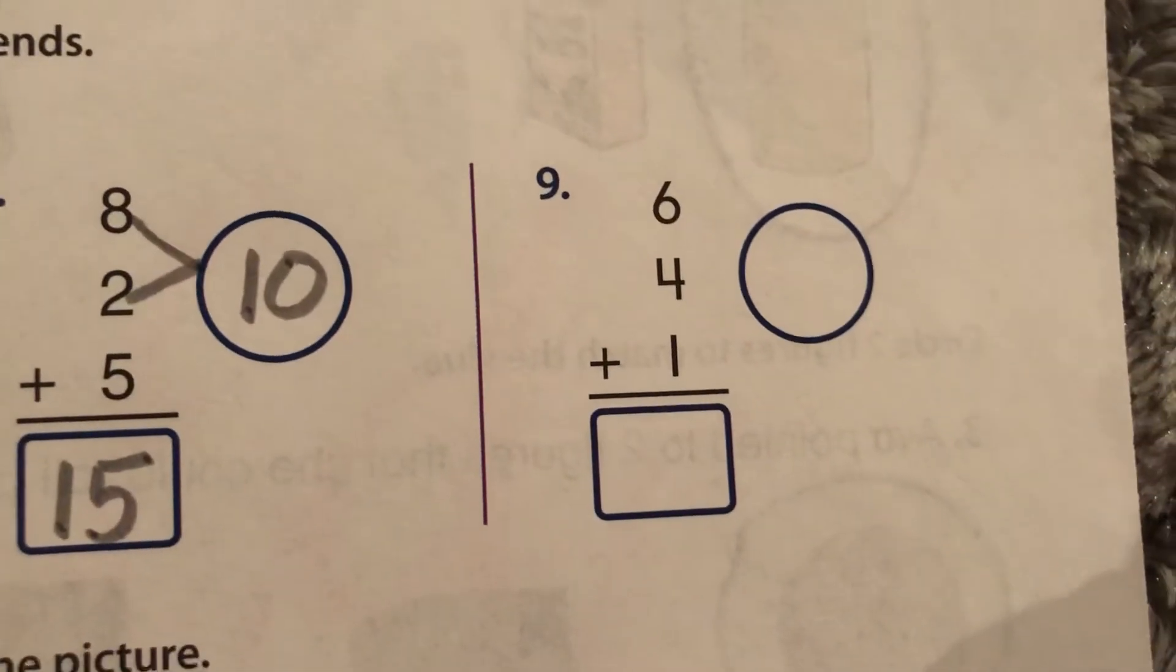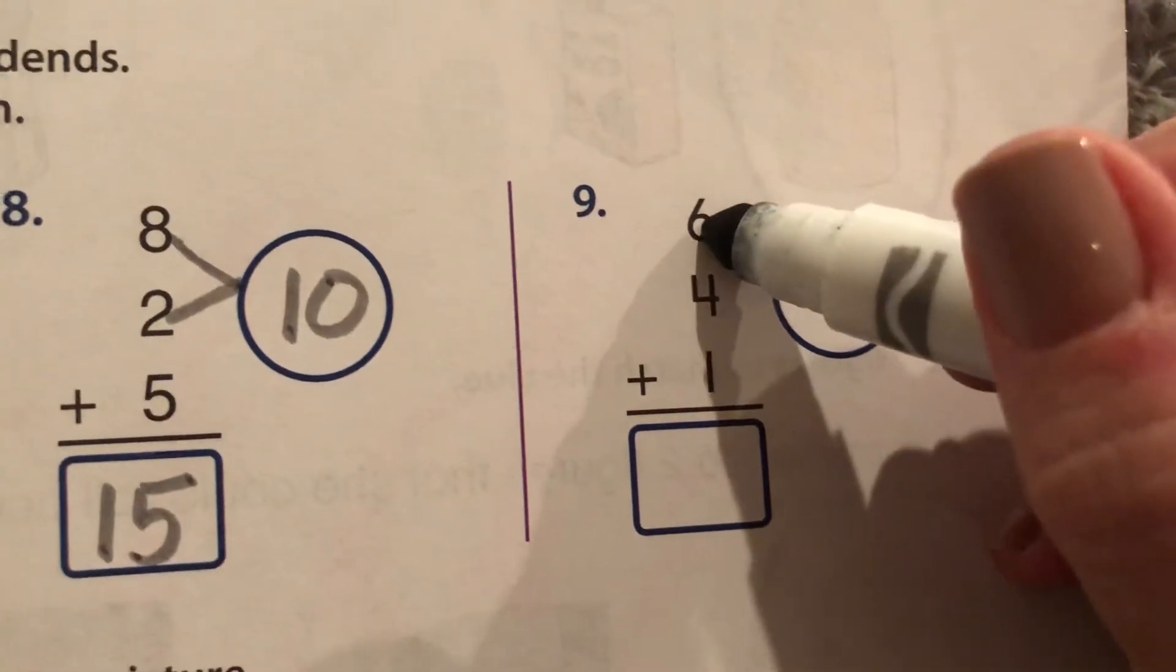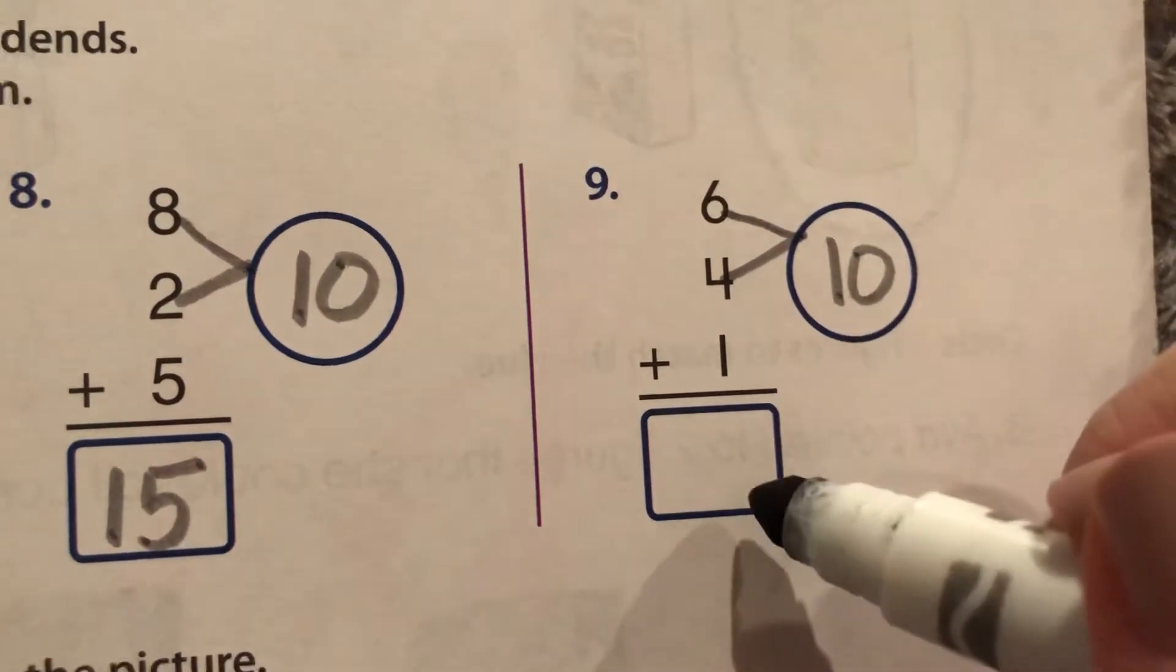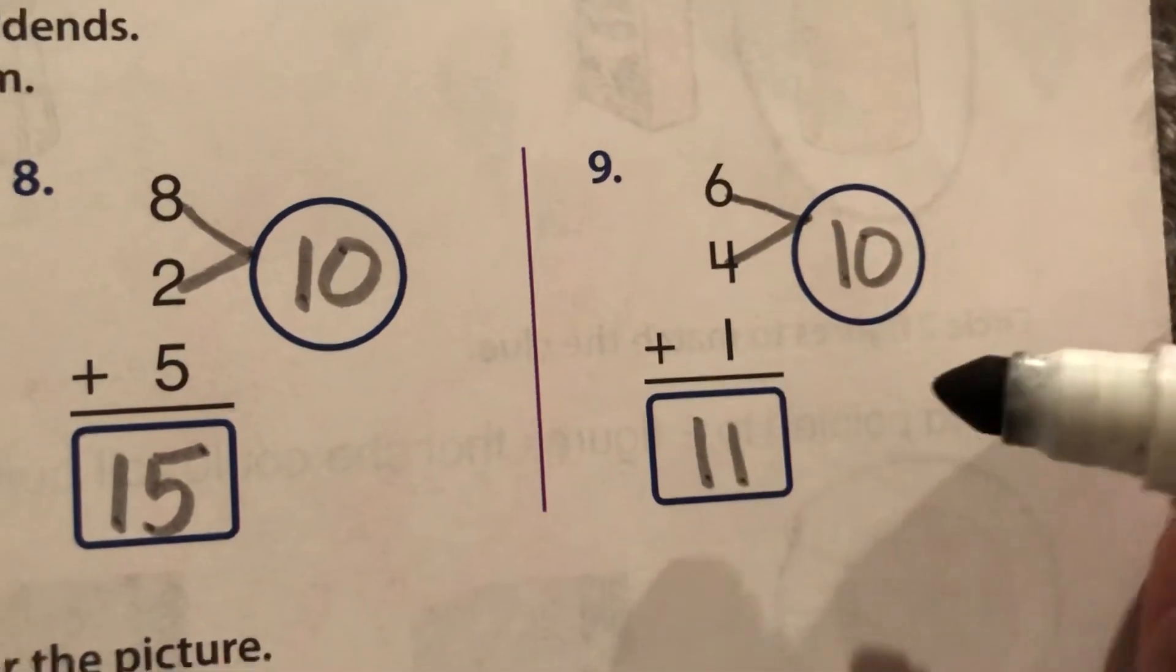What about a make 10 strategy here? What does six and four add up to? Ten. What's 10 plus one? Eleven.